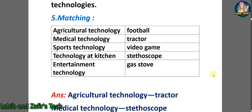Now let's go through some matchings. Here is a chart — in the left column there are: agricultural technology, medical technology, sports technology, technology at kitchen, and entertainment technology. On the right column: football, tractor, video game, stereoscope, and gas stove.